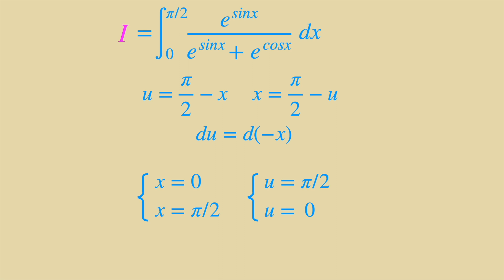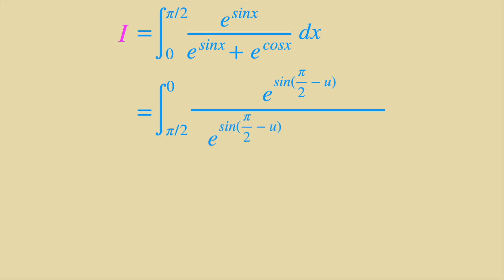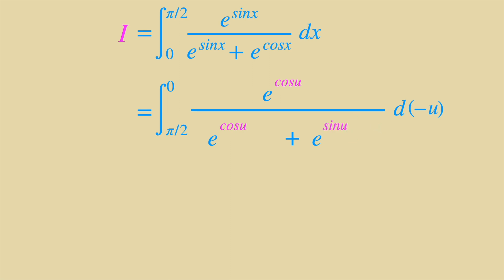Now everything is ready. Let's start the substitution and take the integral to the new world. It equals the integral from π/2 to 0. The numerator equals e to the sine of (π/2 minus u), and the denominator equals e to the sine of (π/2 minus u) plus e to the cosine of (π/2 minus u), times negative du. Remember that π/2 minus u is the complementary angle of u, so sine of (π/2 minus u) equals cosine u, and cosine of (π/2 minus u) equals sine u. As for the negative du, the negative sign can be cancelled as long as we swap the bounds from π/2 and 0.